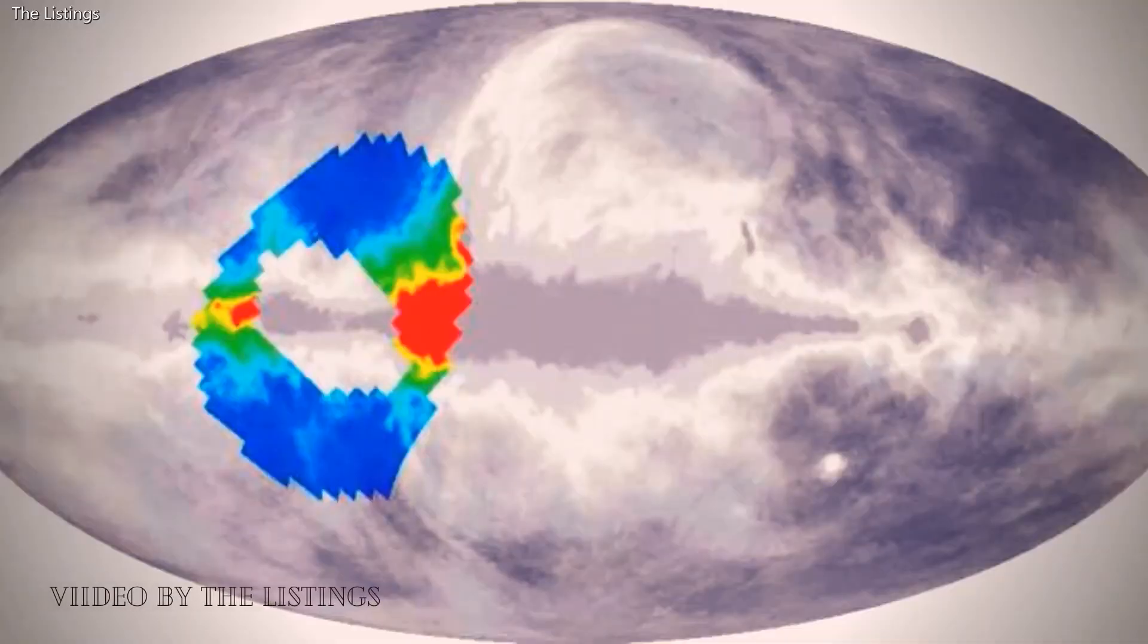Although ARCADE only looked at a specific circular area that makes up 7% of the sky, the roar seemed to be fairly widespread.